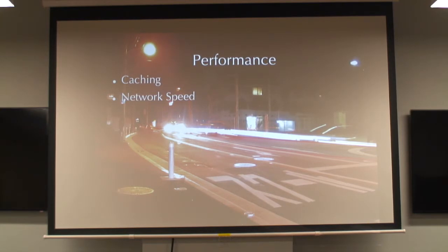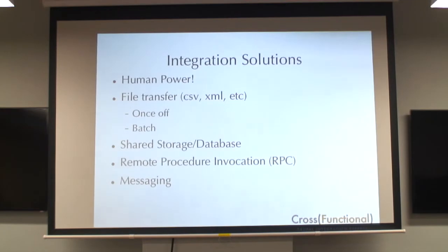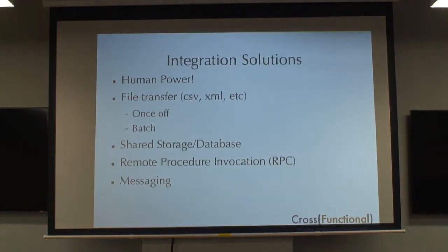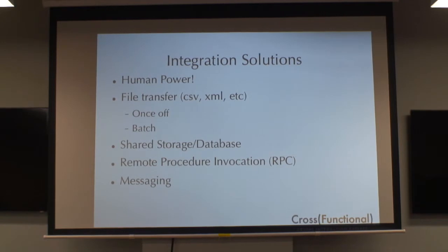Let's touch briefly on what the actual integration methods are. They come in five main high-level categories: first, manual integration, where human power is actually the easiest in some cases; file transfer, whether once-off or batch; shared storage or shared databases; remote procedure integration, with RPC calls; and what most people actually consider as integration — messaging interfaces, so APIs and those kind of things.